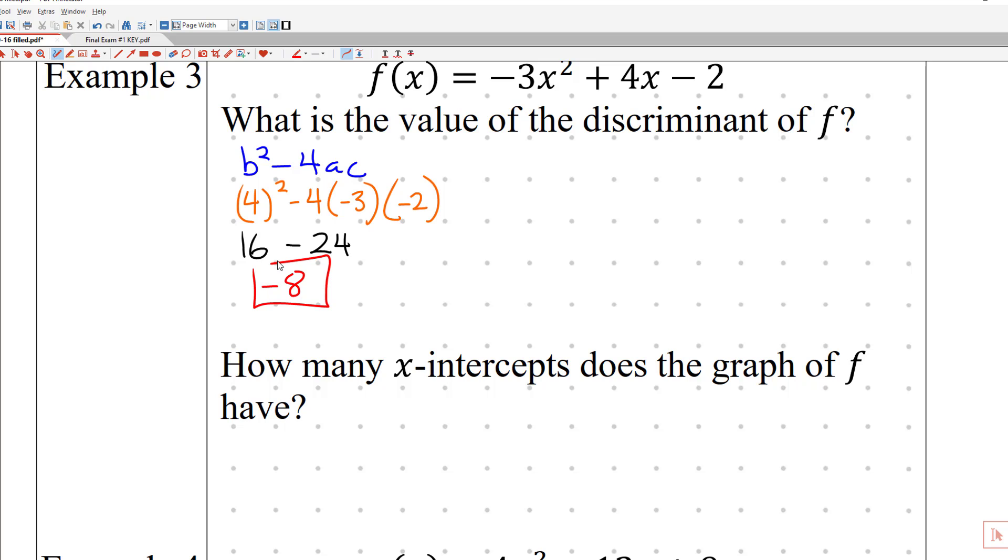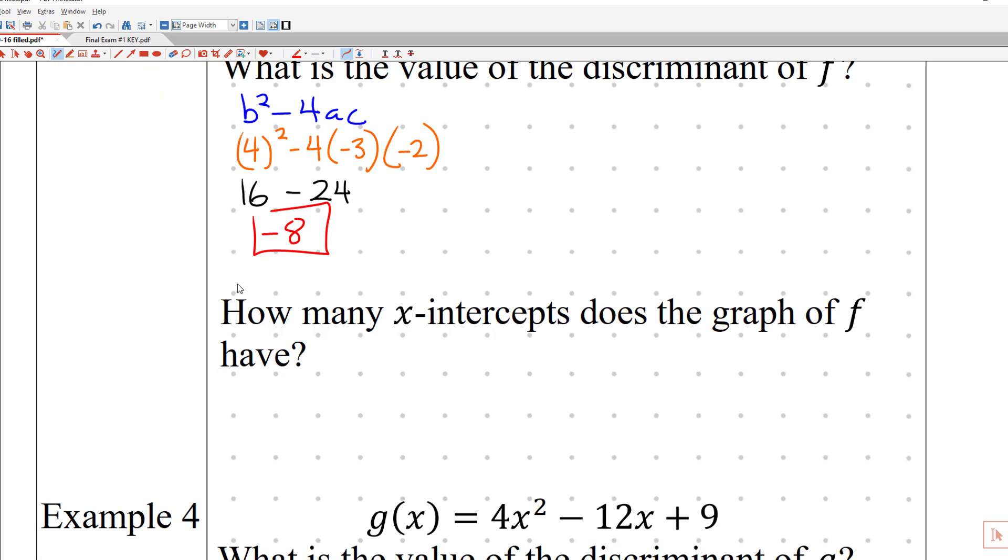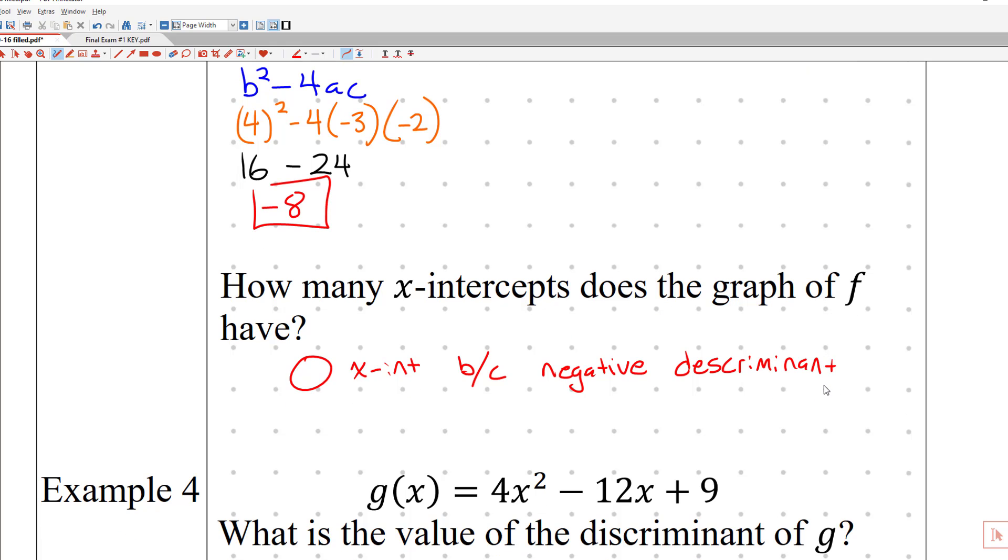Okay, and then since it's a negative value, we can go on and ask the next question. How many x-intercepts does that graph have? And because I have a negative discriminant, there are no or zero x-intercepts. And it's because we have a negative discriminant.